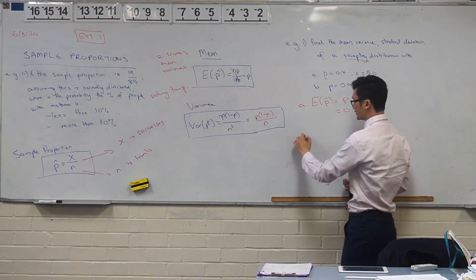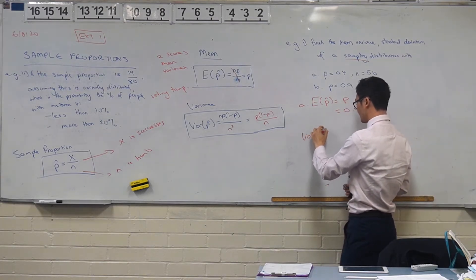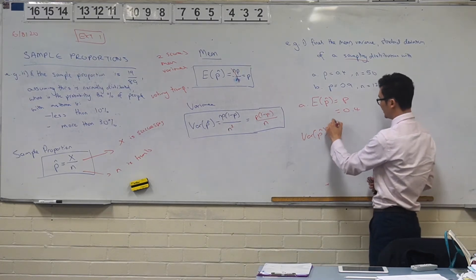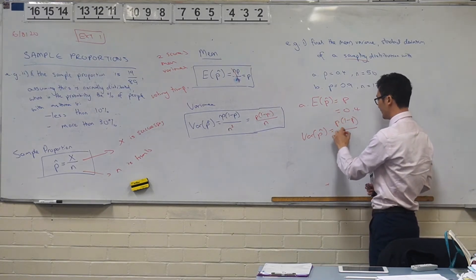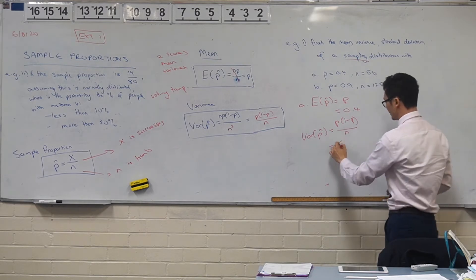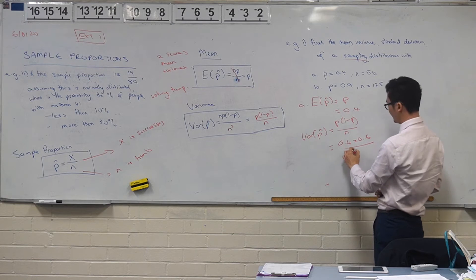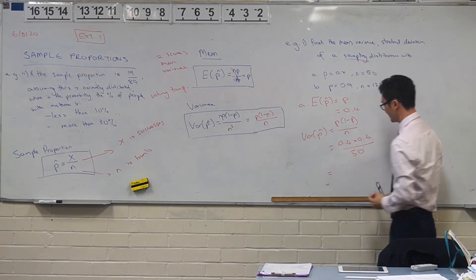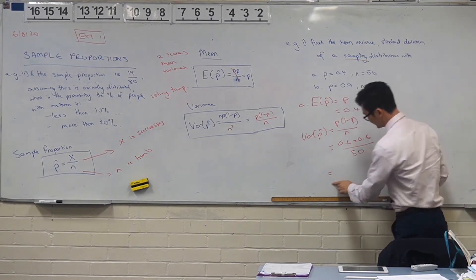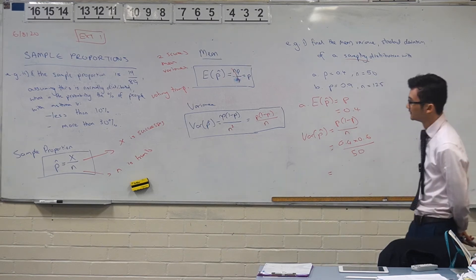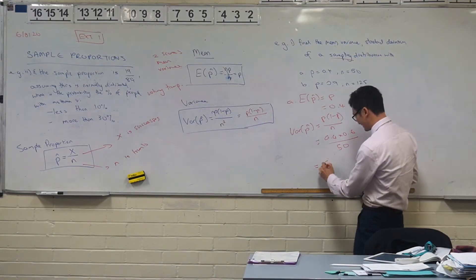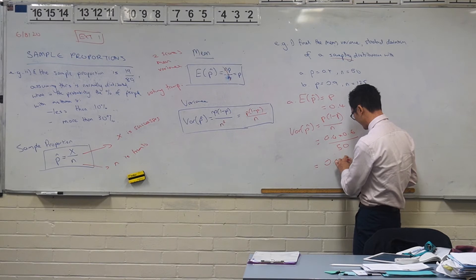My variance though, might need my calculator for this one, we've got p times 1 minus p over n, so 0.4 times 0.6 divided by 50. 0.0048, perfect.